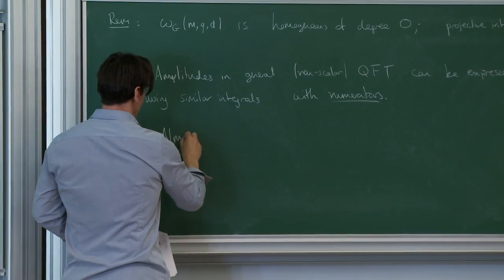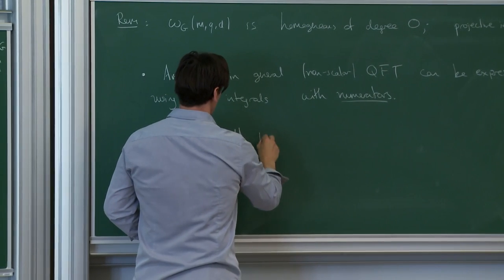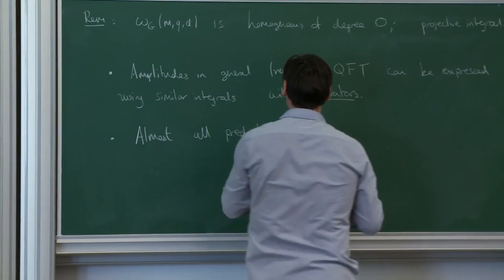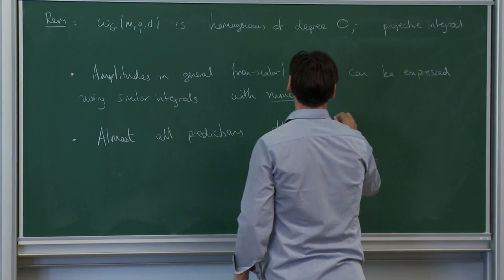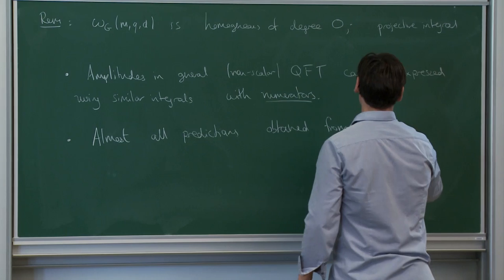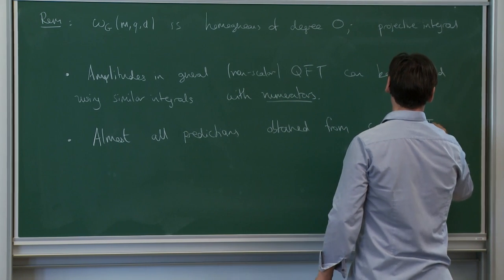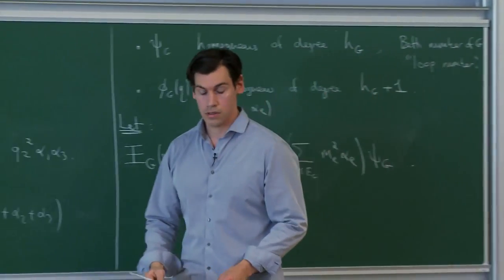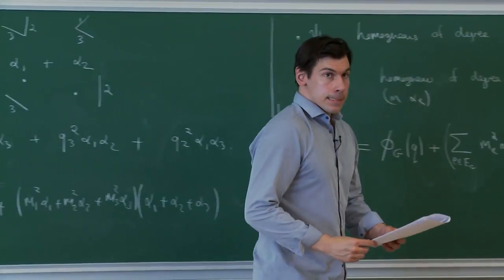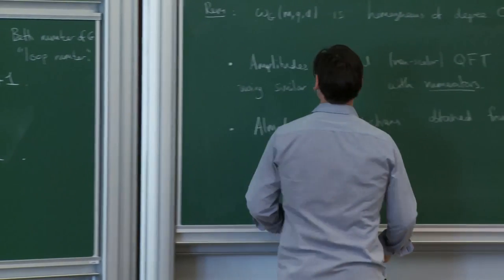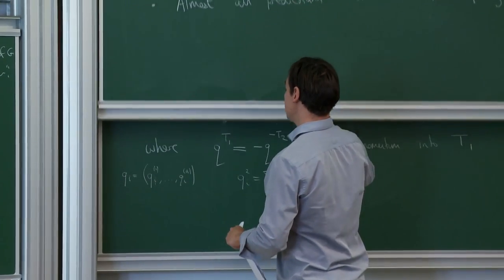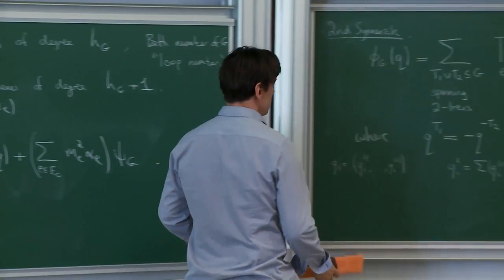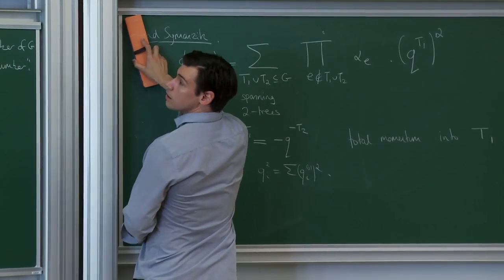And the remark that maybe not all mathematicians are aware of is that almost all the predictions for collider experiments are obtained from computing such quantities, and that's why the calculation of Feynman integrals is an enormous industry. So perhaps before having a break I'll just give some first examples of Feynman amplitudes and try to convince you that you get interesting quantities from them.